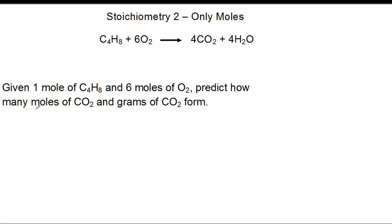Let's examine the first question: how many moles of CO2 form? If we're given one mole of C4H8 and six moles of O2, according to the recipe or equation, we're going to get four moles of CO2. Because stoichiometrically, the proportions are one to six and four to four. So given these stoichiometric equal amounts, we'll get four moles of CO2.